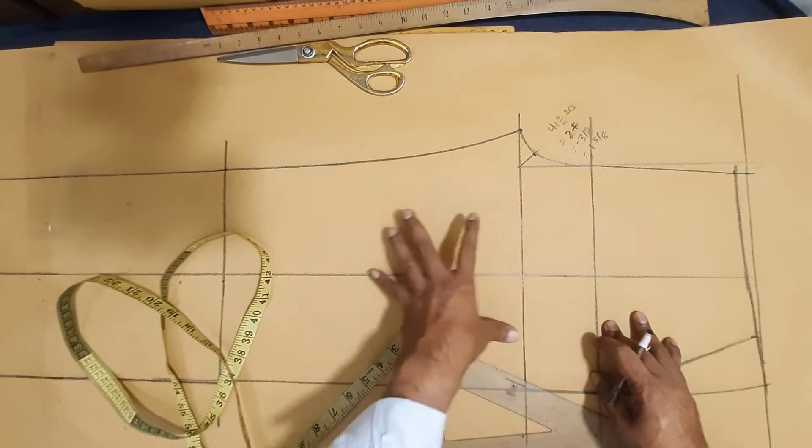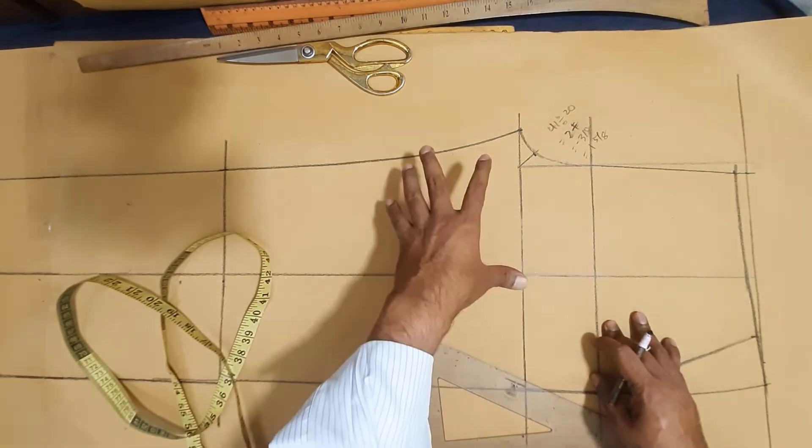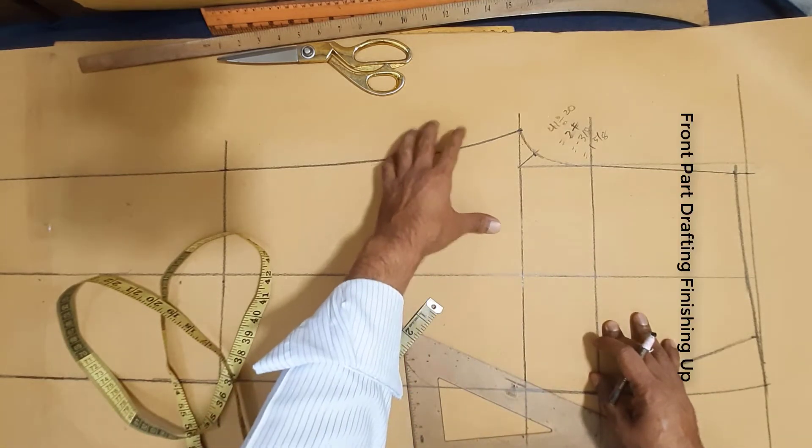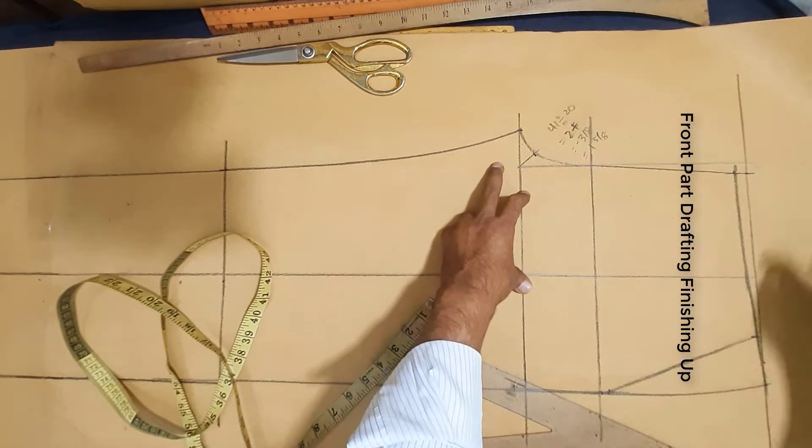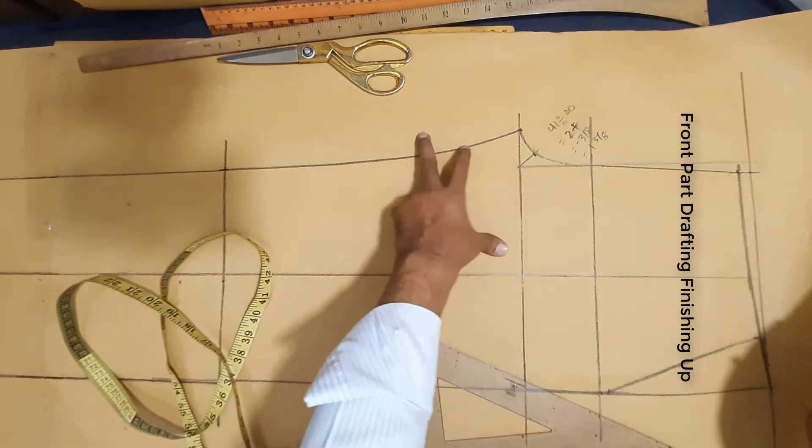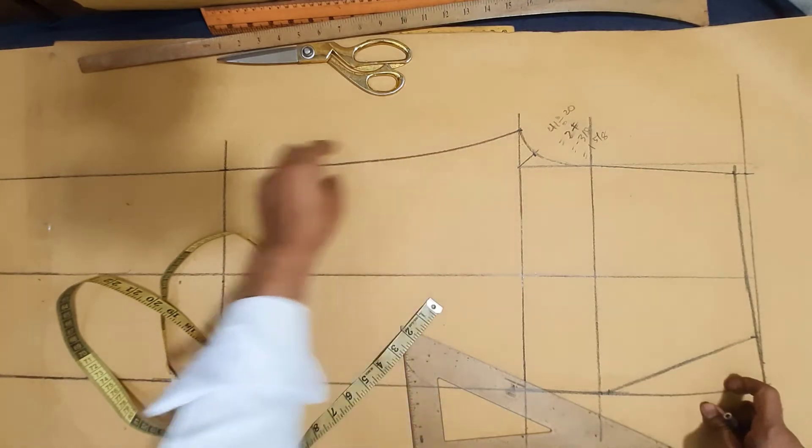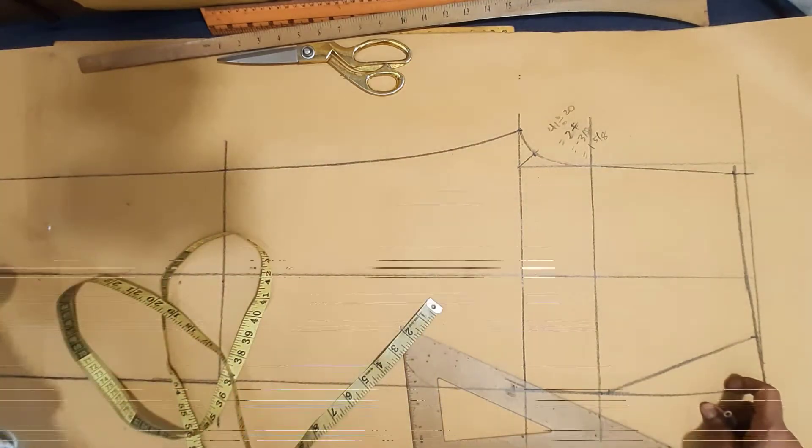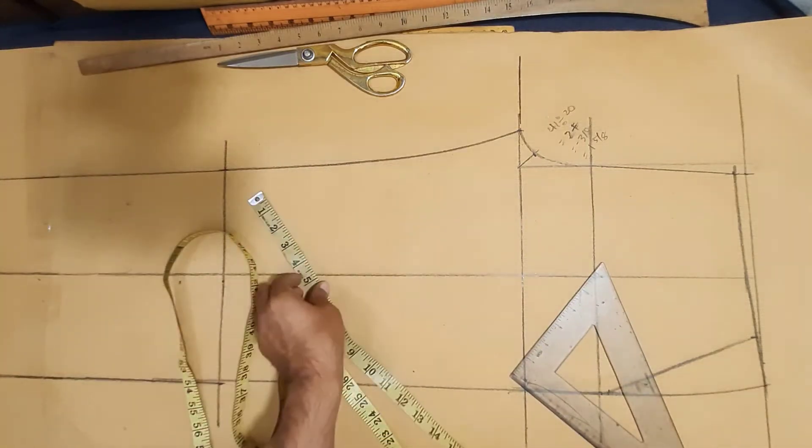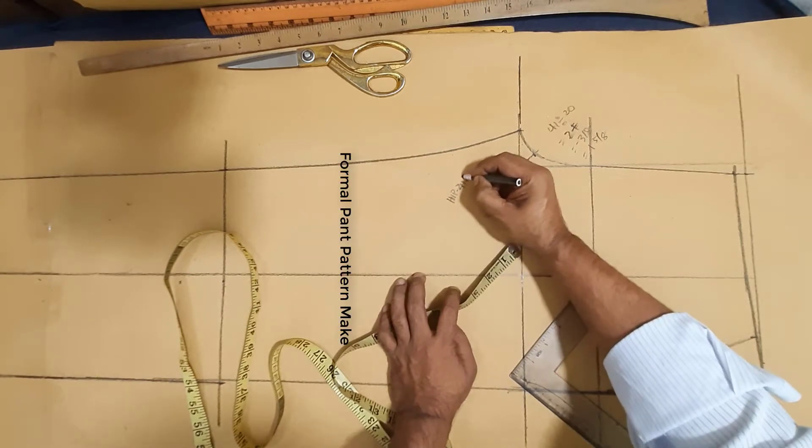Front part drawing, front part drafting, finish. Now I have draft back part only. Waist seam and out seam and in seam, added one and half inch at knee and bottom leg opening.